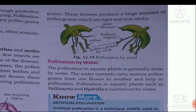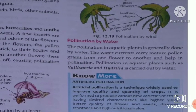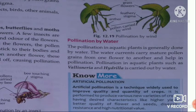Pollination by water: the pollination in aquatic plants is generally done by water. The water current carries mature pollen grains from one flower to another and helps in pollination. Pollination in aquatic plants such as Vallisneria and Hydrilla is carried out by water.